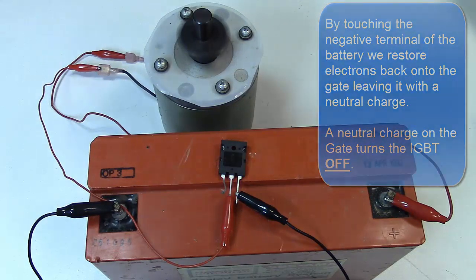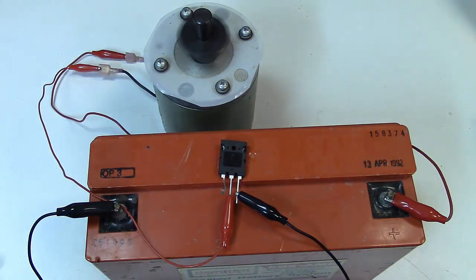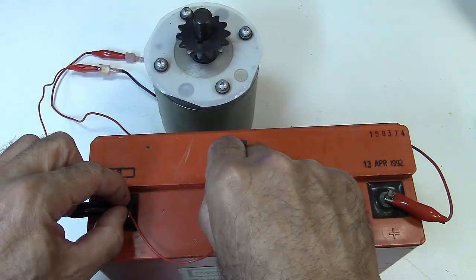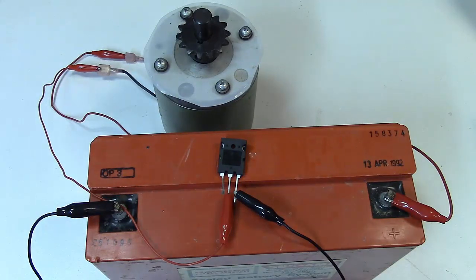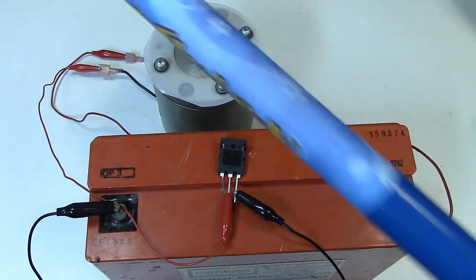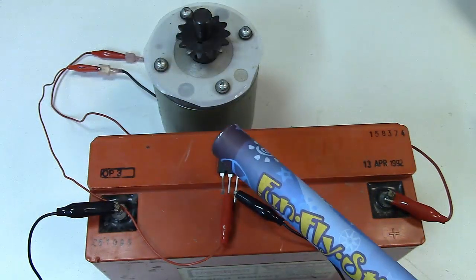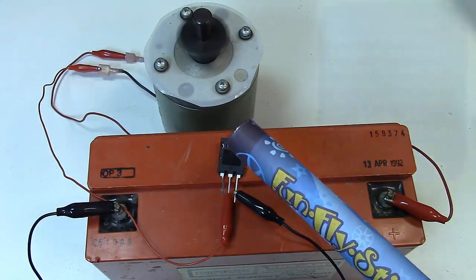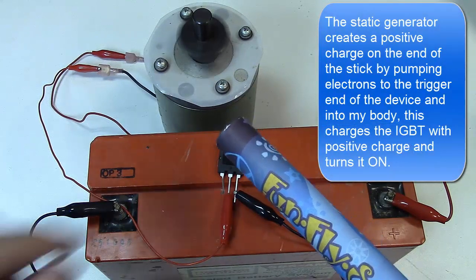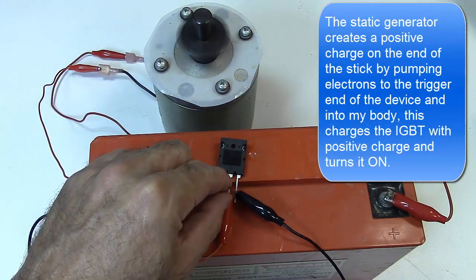And I showed in another video, a MOSFET video, how you can actually turn the device on with static electricity. So here's a device called a Funfly Stick. And I can get this close to the IGBT and I can turn it on.